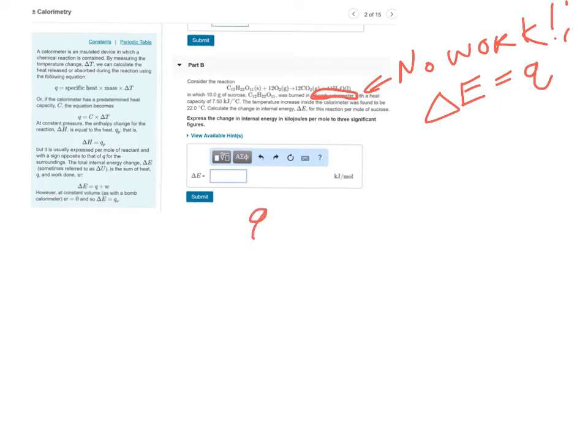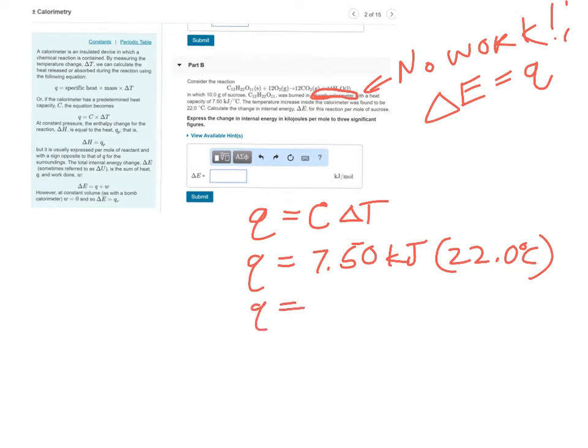So, what's our heat flow here? Our heat flow, since they gave us a heat capacity, is going to be equal to the constant, the heat capacity, times our change in temperature, or our CAT formula. So, our heat flow is equal to 7.50 kilojoules times our change in temperature, 22 degrees Celsius. And that gives us 7.50 times 22, which gives us 165 kilojoules.